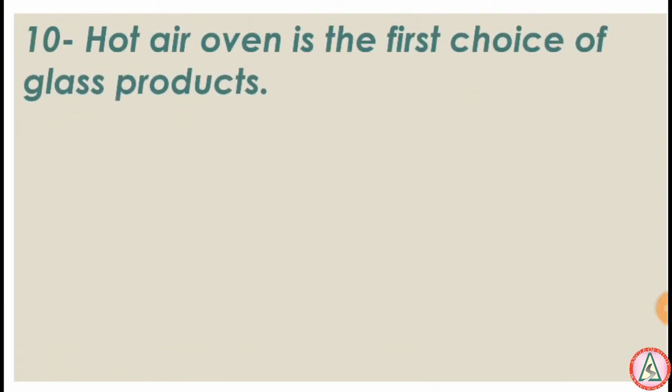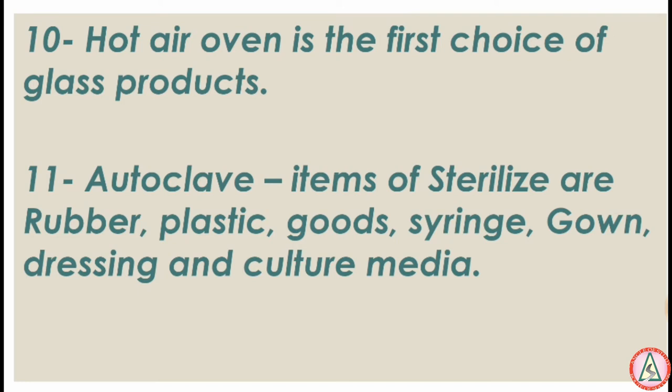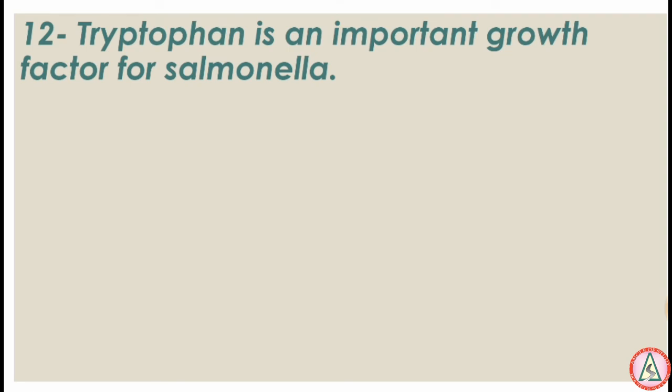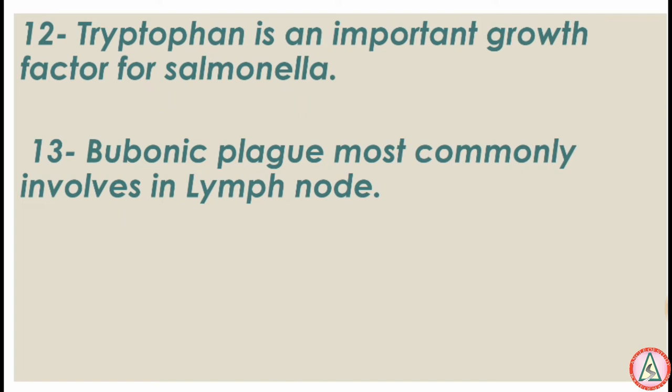For sterilization, hot air oven is the first choice for glass products. Items sterilized by autoclave include rubber, plastic goods, syringes, gowns, dressings, and culture media. Tryptophan is an important growth factor for Salmonella. Bubonic plague most commonly involves the lymph nodes.